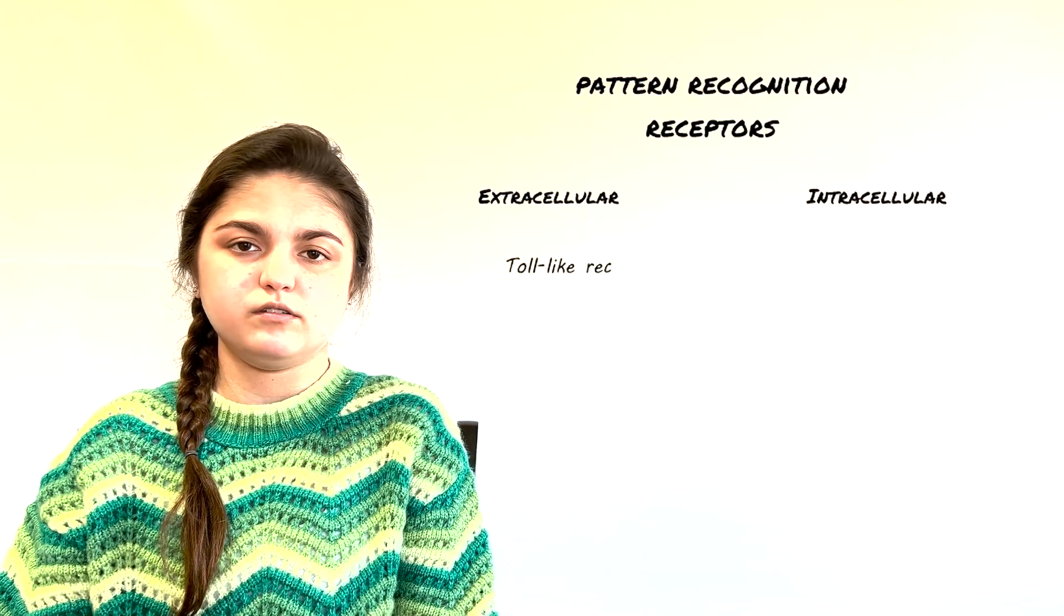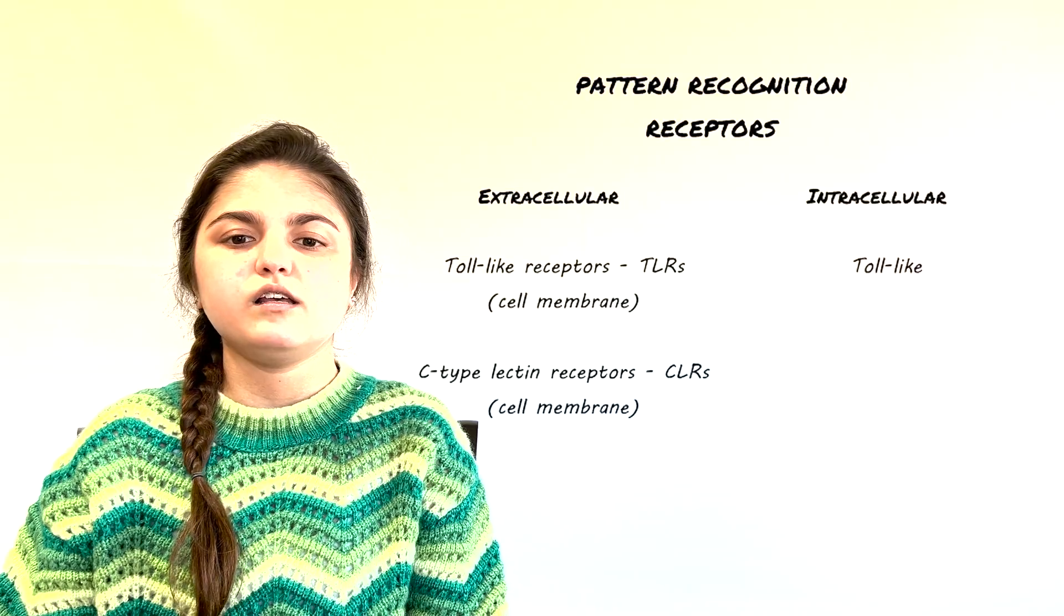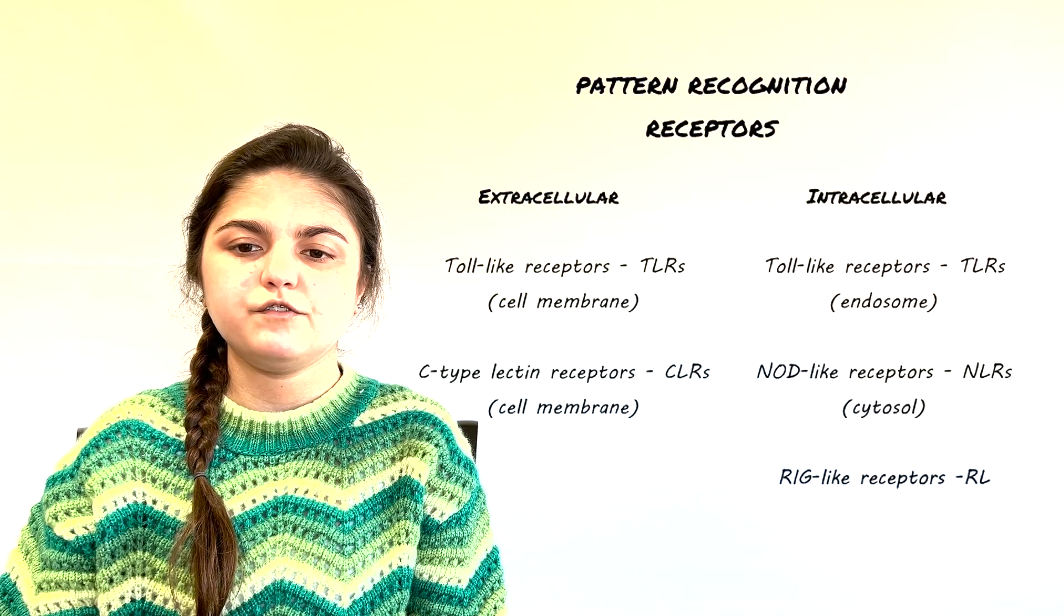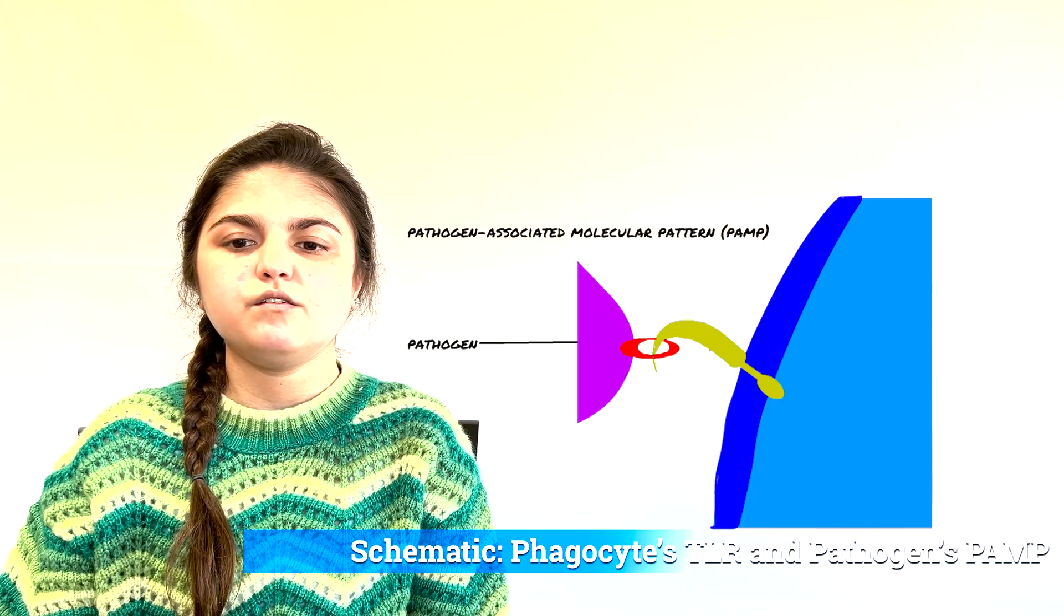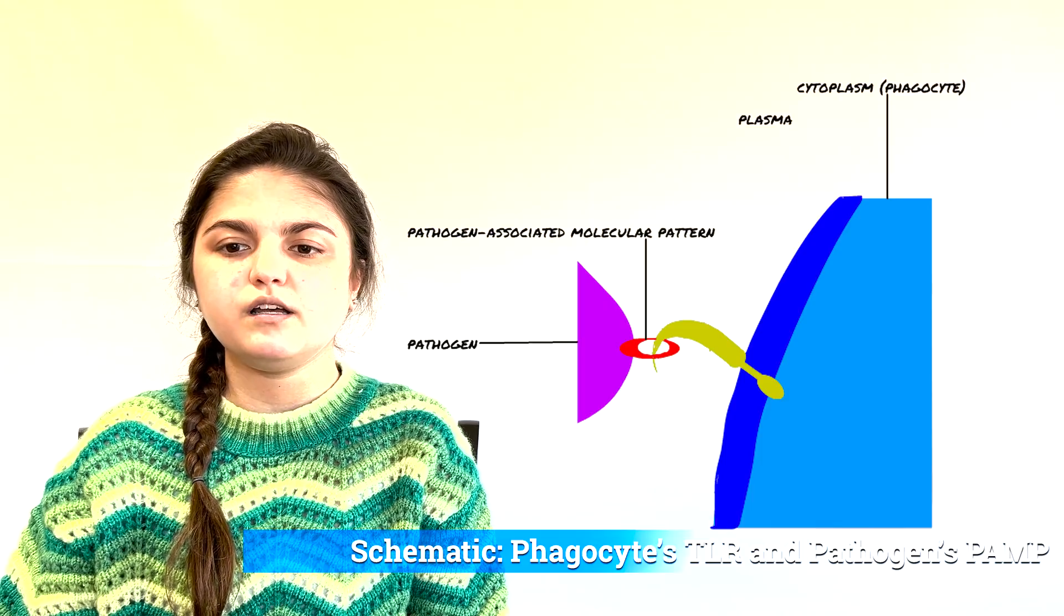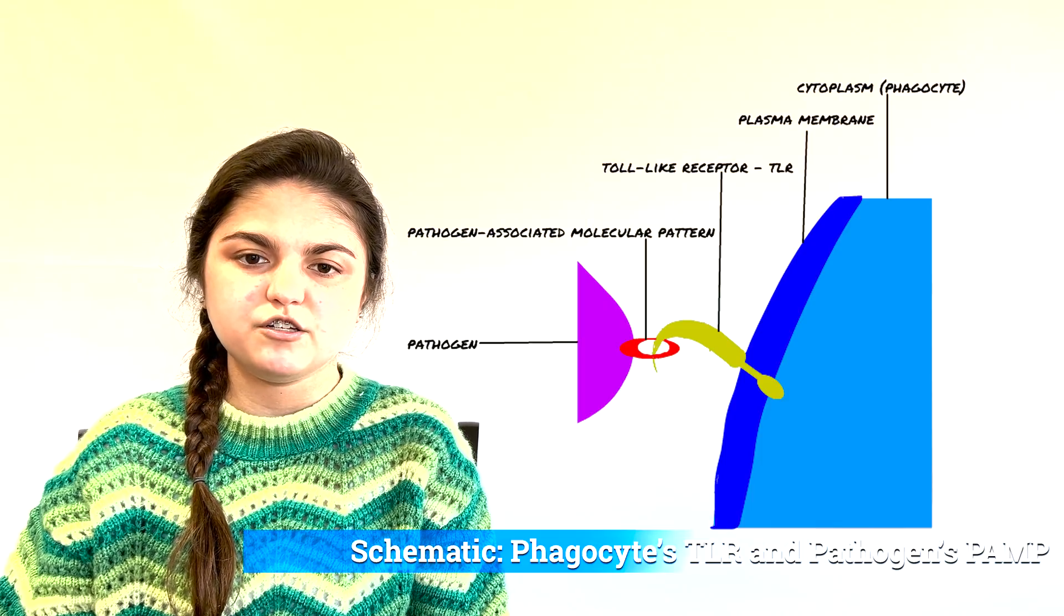The recognition of PAMPs is accomplished by specific receptors of the cells in the immunity. These receptors may be on the cell surface or inside the cell. For example, toll-like receptors are present on the plasma membrane and in endosomes. These were first discovered in Drosophila fruit flies, in whom the absence of such receptors causes extreme vulnerability to fungal and bacterial infections.